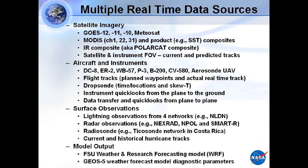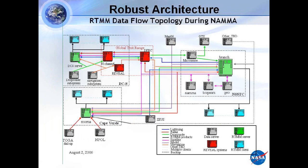For aircraft data, we've tracked the DC-8, ER-2, WB-57, NOAA P-3, NASA P-3, NASA B-200, the Department of Energy Convair 580, and an Aerosonde. We've gotten dropsonde information and are able to transfer quick-look data from the plane to the ground and vice versa. Surface network, lightning data, radar data, and radiosondes are also included. We've displayed the FSU WRF model during Arctis and a GEOS-5 weather forecast model. All these things can be brought in.